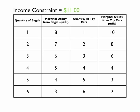If you have an income constraint of $11, how many bagels and toy cars can you buy to maximize your utility if bagels are $2 and toy cars are $1?